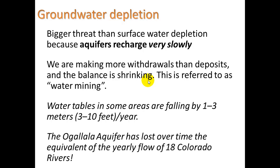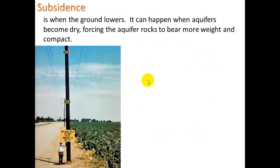The Ogallala Aquifer has lost over time the equivalent of the yearly flow of 18 Colorado Rivers. When we have overdraft or over-extraction, we get something called subsidence — when the ground actually lowers because water is taken out underneath it. It can happen when aquifers become dry, forcing the aquifer rocks to bear more weight and compact or crush. In one example, the ground used to be much higher in 1925, and the elevation above sea level has been dropping significantly.